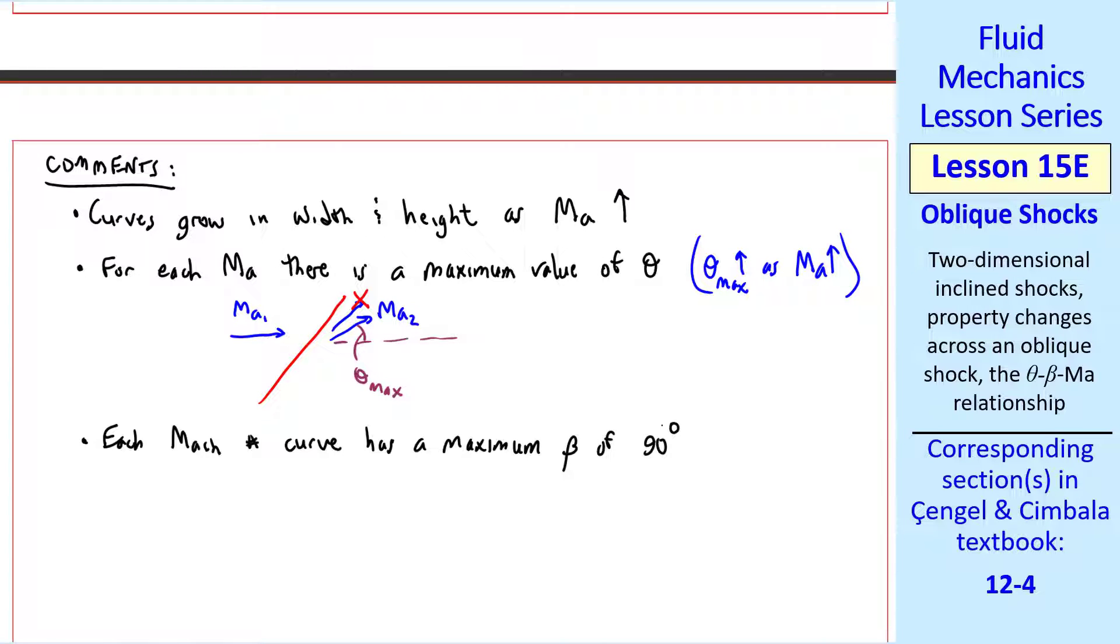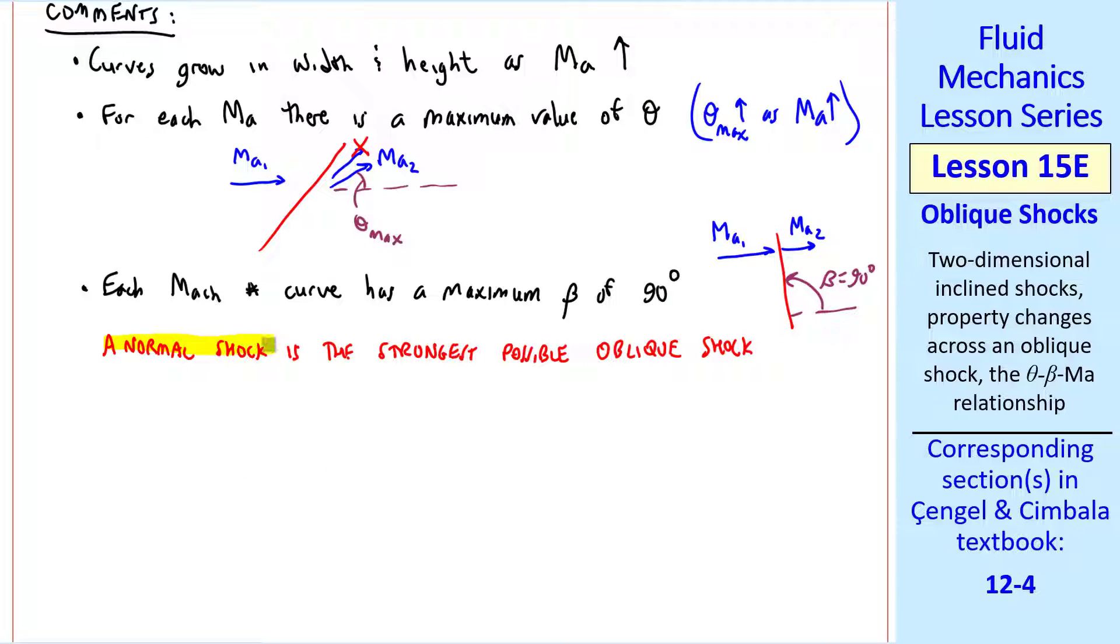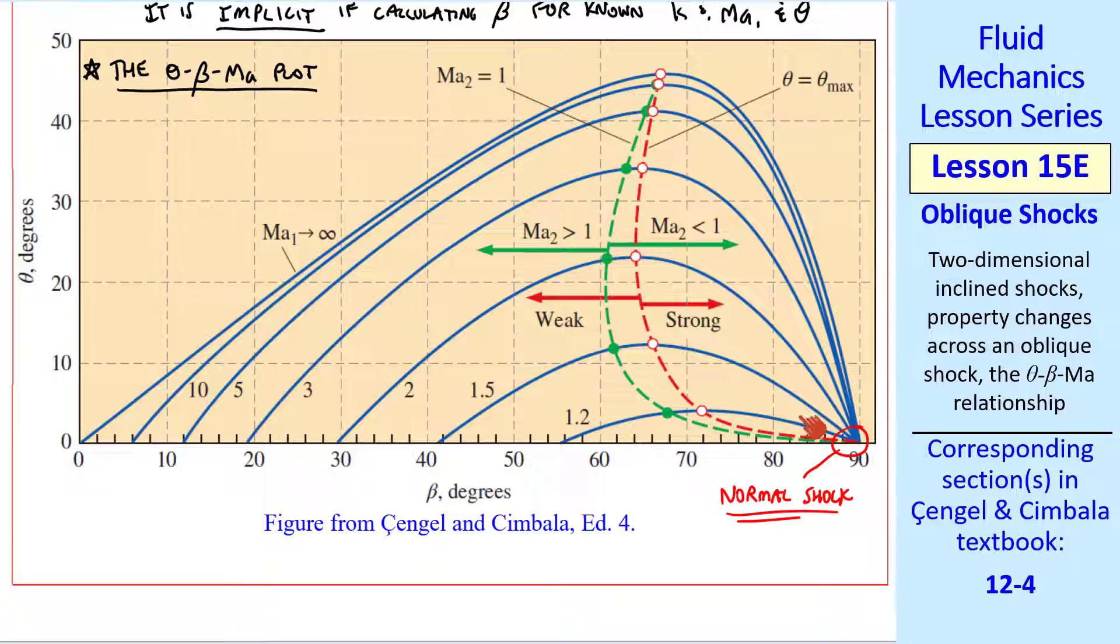Each Mach number curve has a maximum beta of 90 degrees. We can see that every one of these curves intersects at 90 degrees. This is the special case of a normal shock. A normal shock is the strongest possible oblique shock. Any of these oblique shocks to the left of 90 degrees, in other words, beta is smaller, is a weaker shock than a normal shock.